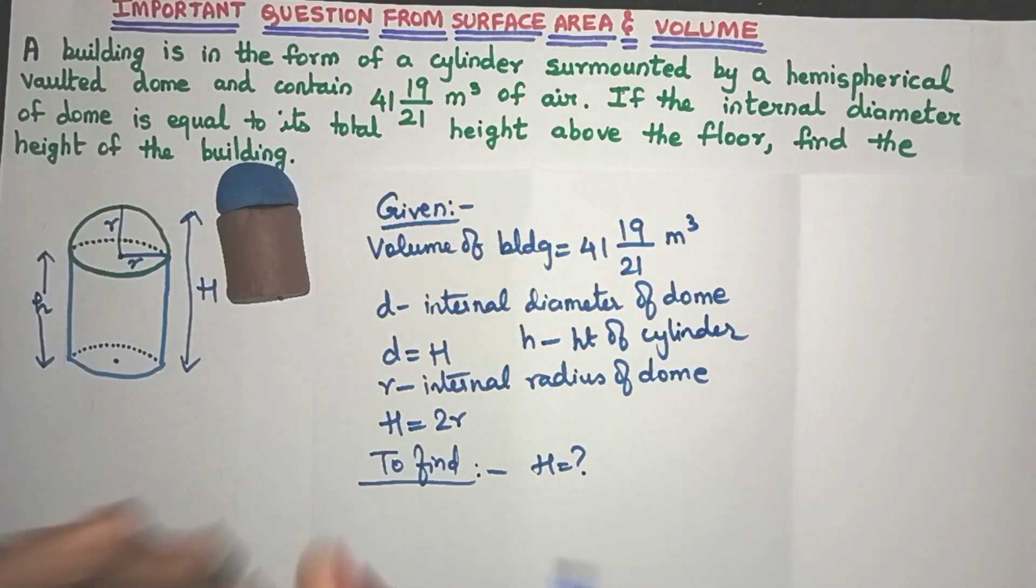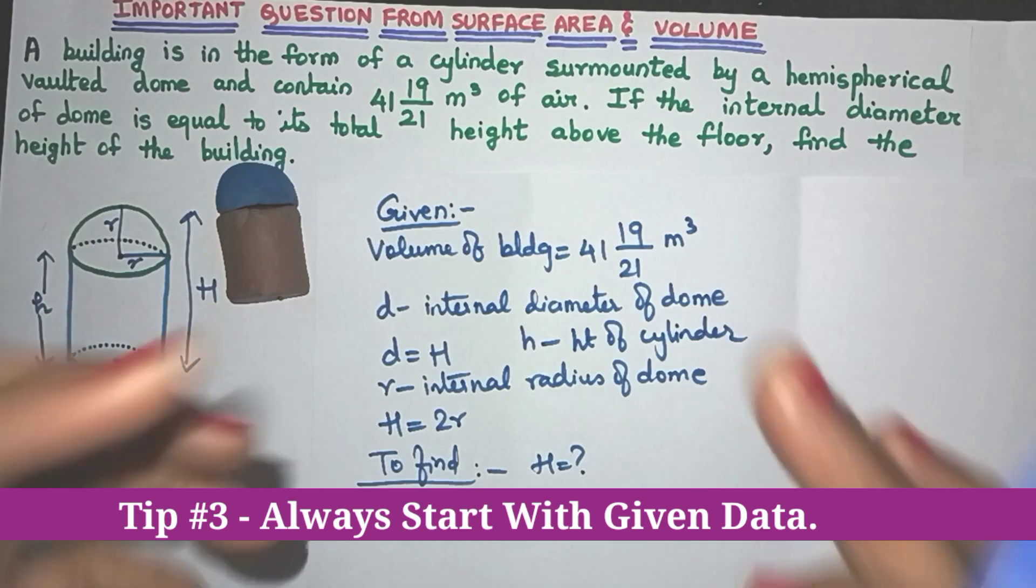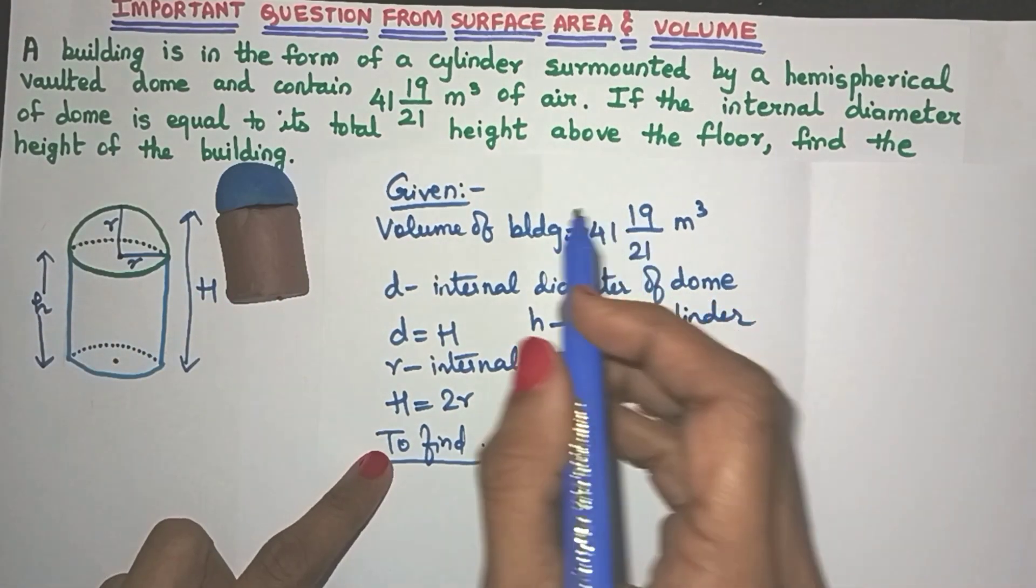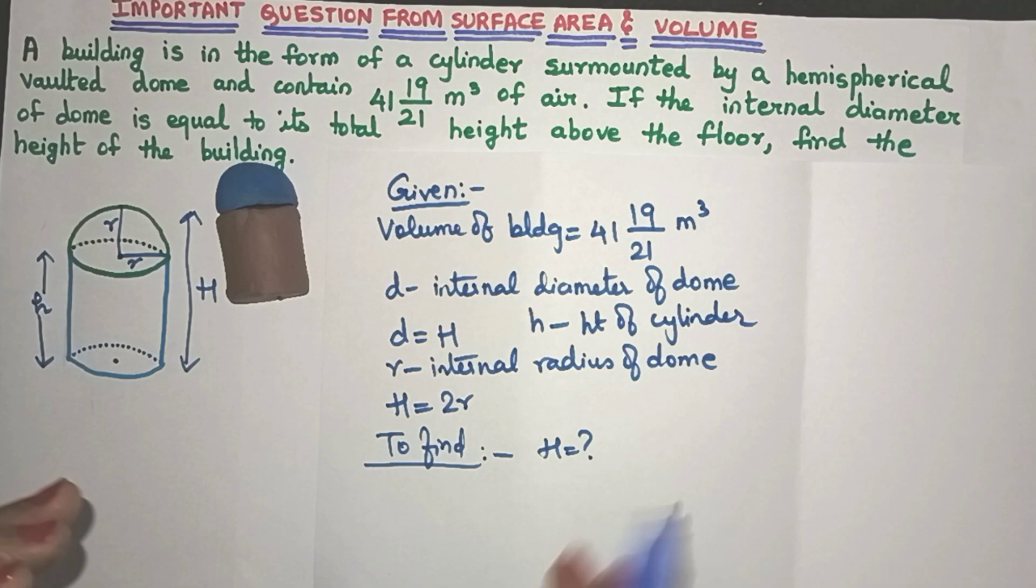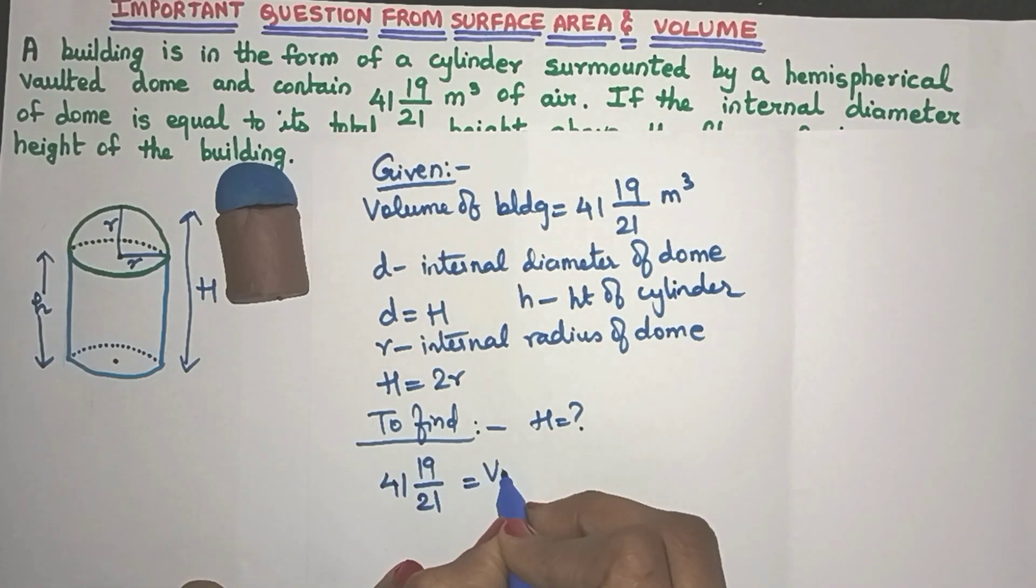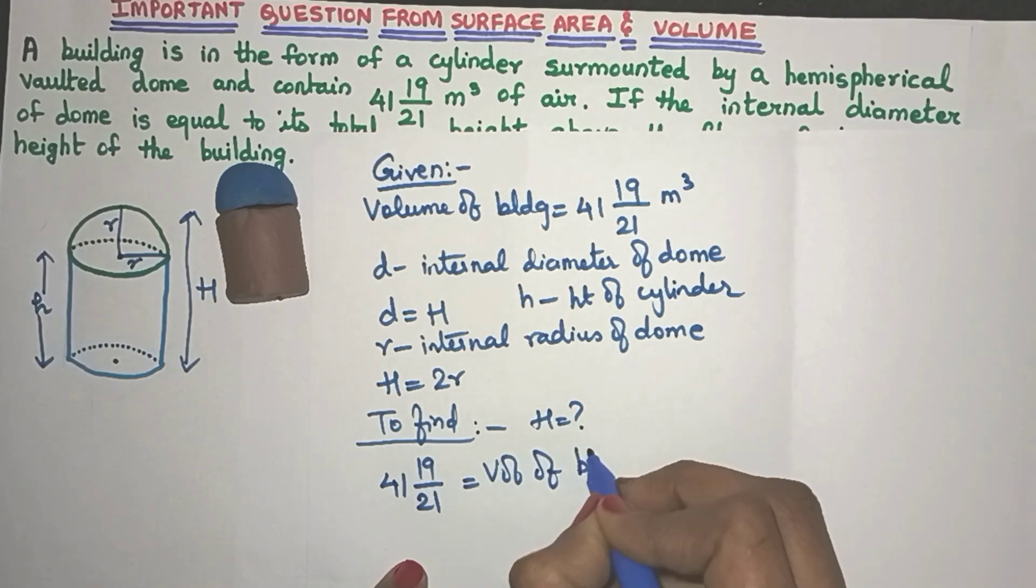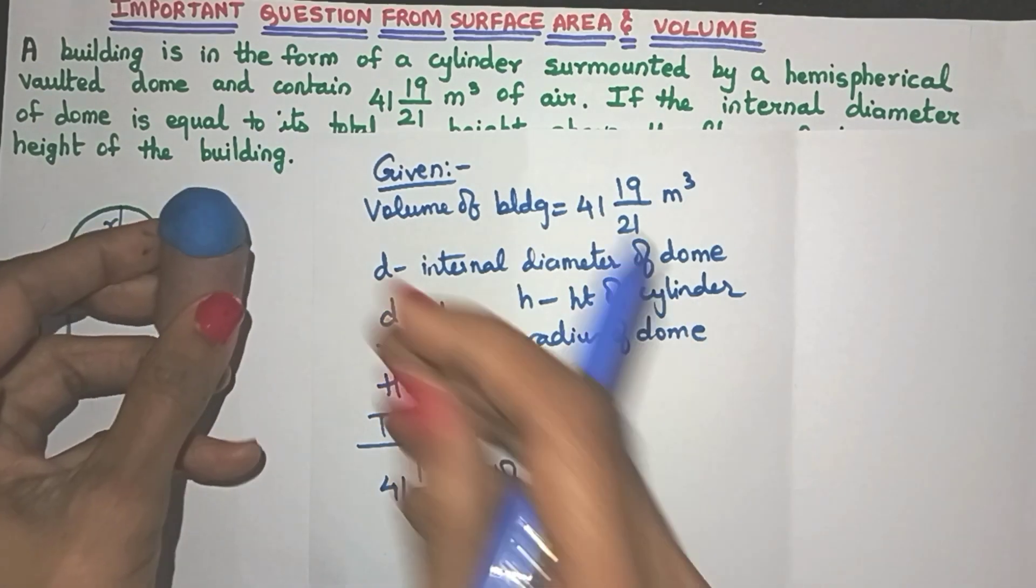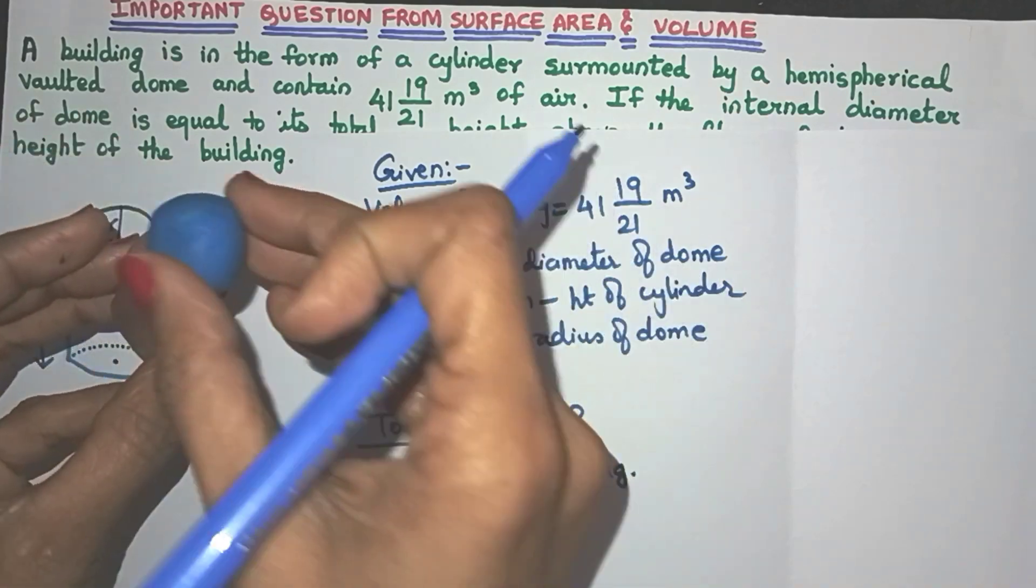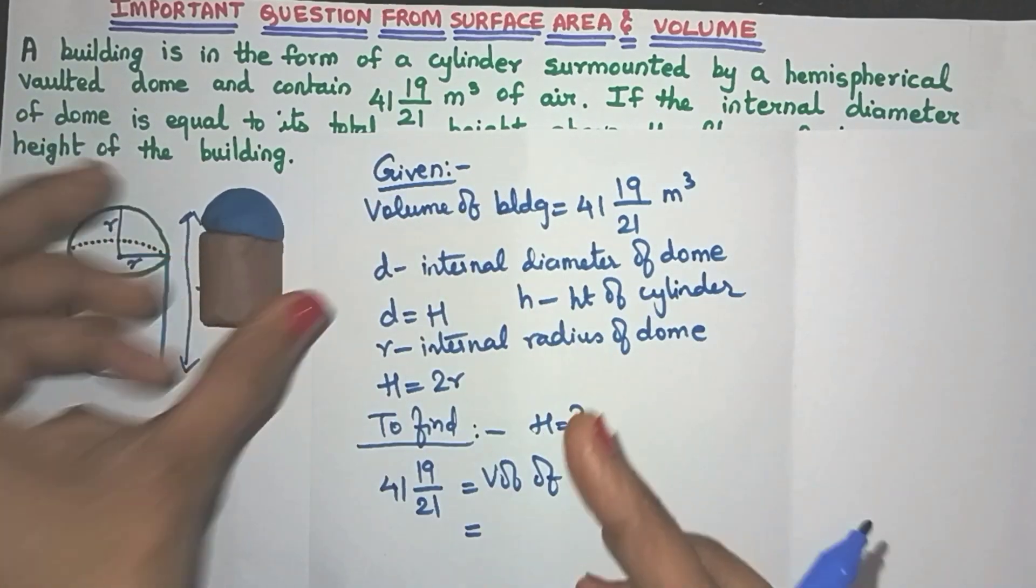So friends, the next step is start with the given data and then try to find out what they have asked. So the given data is that they have given the volume of the building. So let's start with that. So 4119 by 21 is equal to the volume of the entire building, right? Now what is the volume of the building?